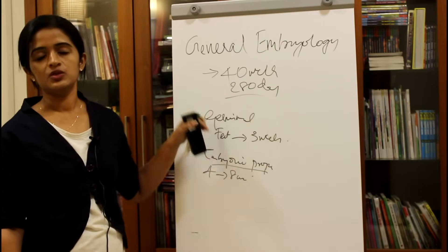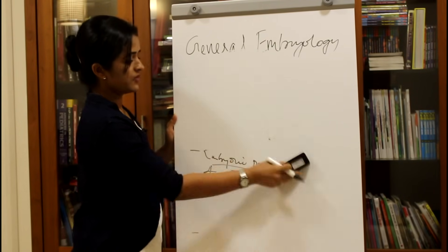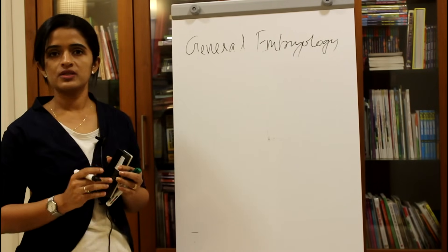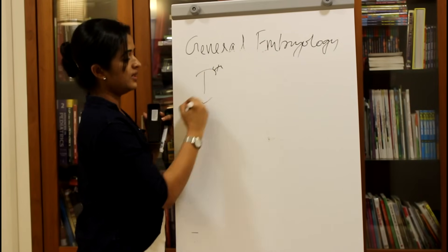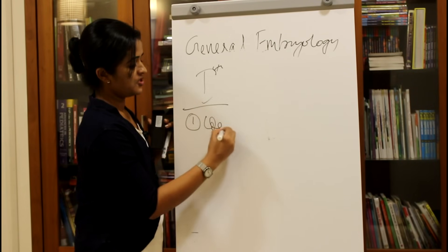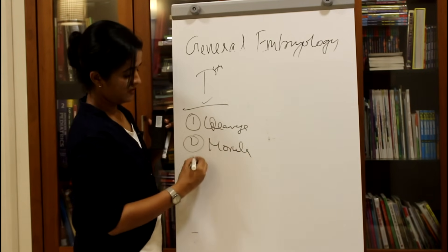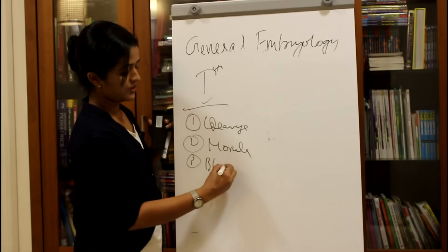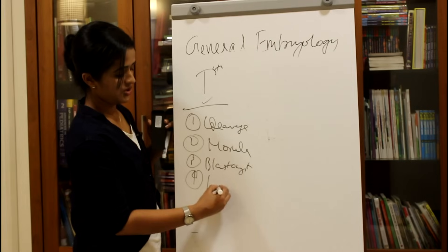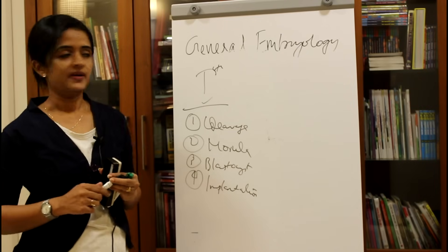Now let's see what is happening during the germinal period, moving to the first week of development. The major events happening are: 1. The cleavage division, 2. The formation of morula, 3. The formation of blastocyst, and 4. Implantation. These are the major events happening during the first week of development.